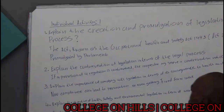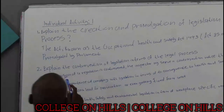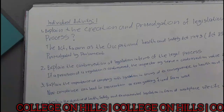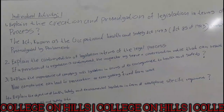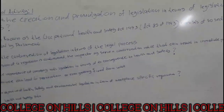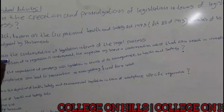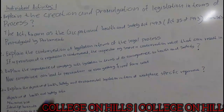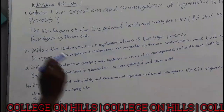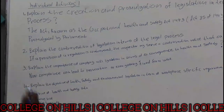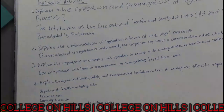This legislation — the Act — was created by government. It's the Health and Safety Act 1993, the Act 85 of 1993. It consists of 50 sections promulgated by parliament.